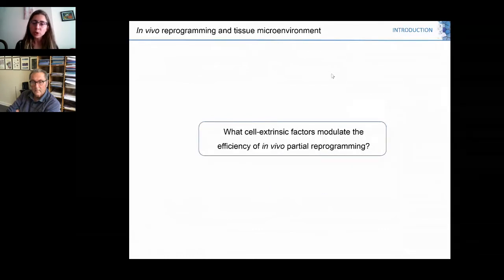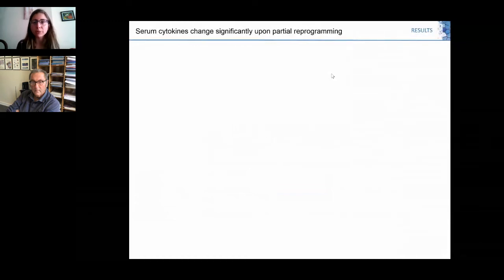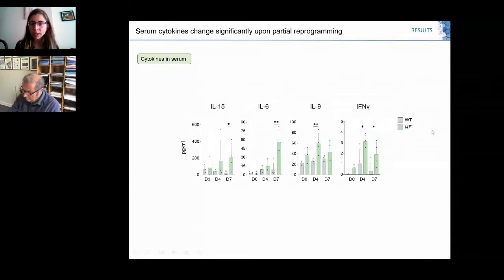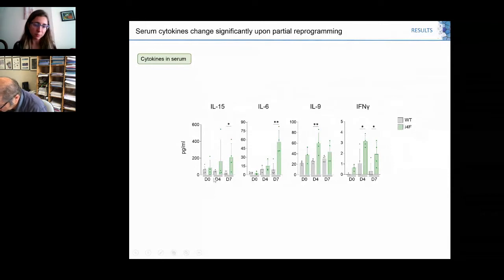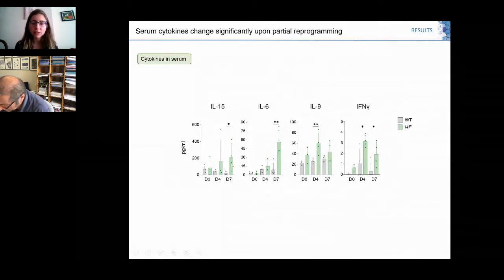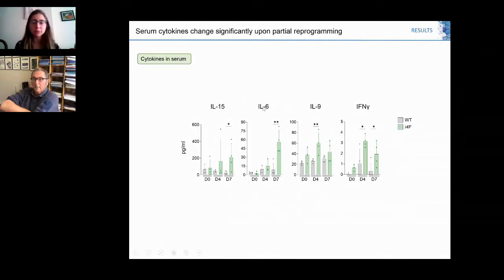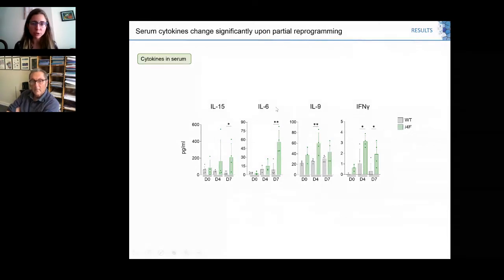In this project we focused mainly on the immune system. The first evidence that the immune system could play a role in partial reprogramming was when we checked cytokine levels in serum of animals undergoing partial reprogramming. We compared i4F mice versus wild type mice at different time points and saw significant increases in different cytokines: interleukin-15, mainly an activator of NK cells, interleukin-6, previously described in our lab to be important for reprogramming.